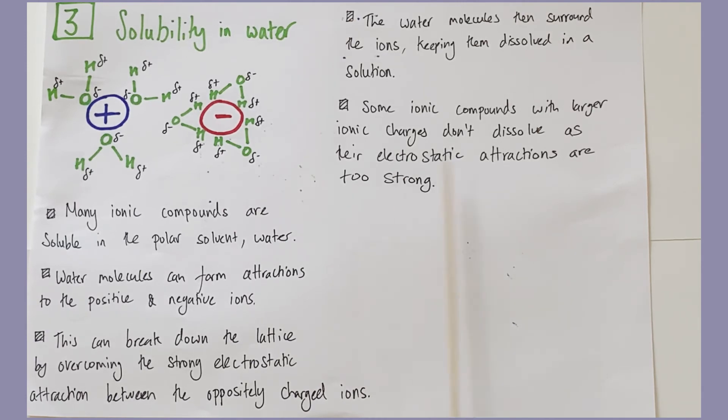Some ionic compounds with large ionic charges will not dissolve because their attractions, their strong electrostatic attractions are just too strong for the water molecules to disrupt, to overcome. But if they can, they will. And ions, ionic compounds will dissolve in water.